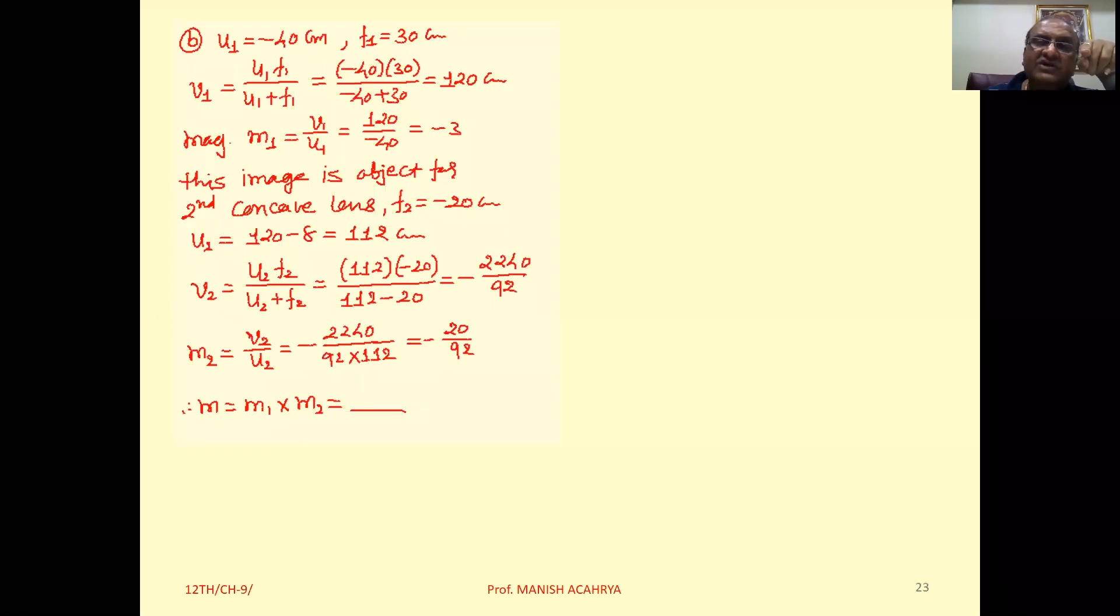So for the concave lens, the position of the image that will behave as an object is at distance 120 minus 8, which is 112 centimeter. The final image V2 equals U2 F2 upon U2 plus F2.